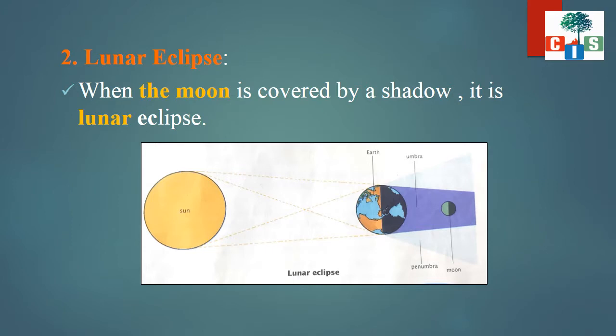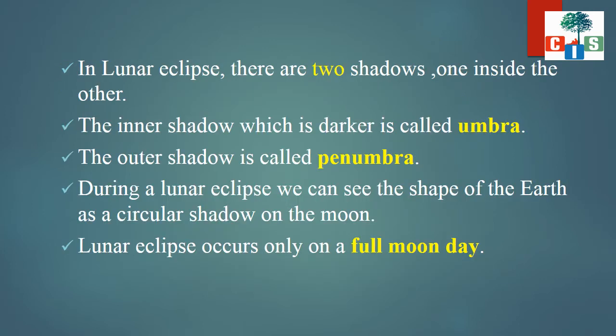Now let's move to the second eclipse — the lunar eclipse. In solar eclipse, the Sun gets covered by the shadow of the Moon. But here, in lunar eclipse, the Moon is covered by the shadow of the Earth. In lunar eclipse there are two shadows, one inside the other. The inner shadow, which is the darker one, is the umbra, and the outer shadow which is faint is called the penumbra.